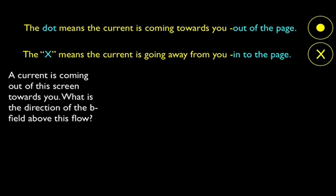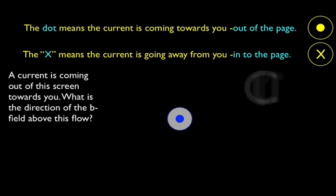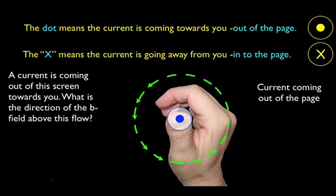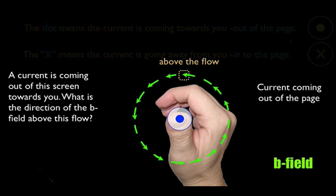Example: a current is coming out of the screen towards you — shown as a dot. What's the direction of the B-field above this flow? Using the closed right-hand rule, I close my right hand and stick my thumb out toward me, because the current is coming out of the screen. My fist sits on the screen making a circle — that's the direction my fingers are rotating, which is the B-field. Above the flow, the B-field is tangent to that circle, pointing from right to left.